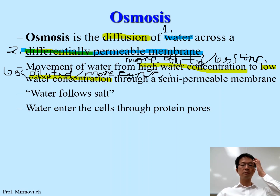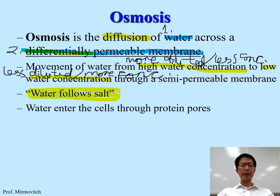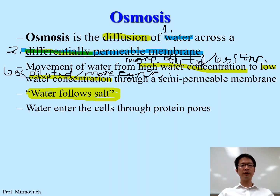Point number four is highly related to diffusion: the higher the temperature, the faster the rate. Why? The higher the temperature, the more energy is in the system. When the molecule gets more energy, it becomes more excited and moves faster.